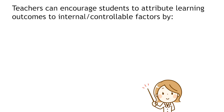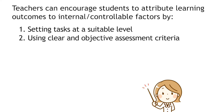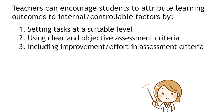So how does attribution theory apply to teaching? There are several ways in which teachers can help students attribute learning outcomes to factors that are internal and controllable, and as a result, hopefully increase students' motivation to learn. First, teachers can make sure tasks are at a suitable level of difficulty. Second, teachers can make the assessment criteria as clear and objective as possible. Third, teachers can consider factors like improvement and effort in the assessment criteria, while keeping the criteria clear and objective.